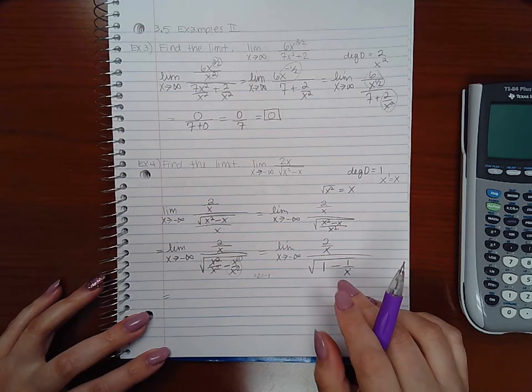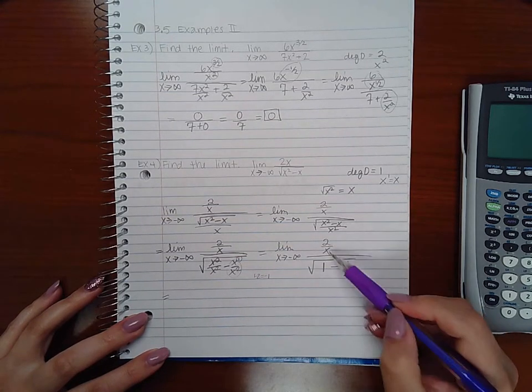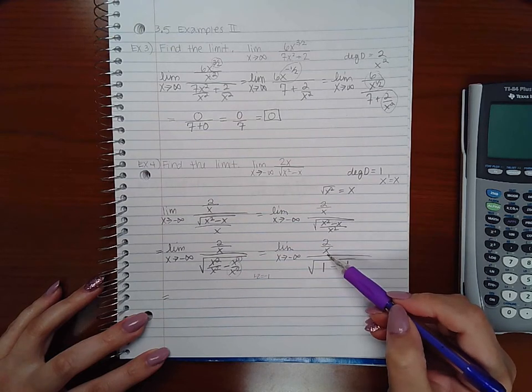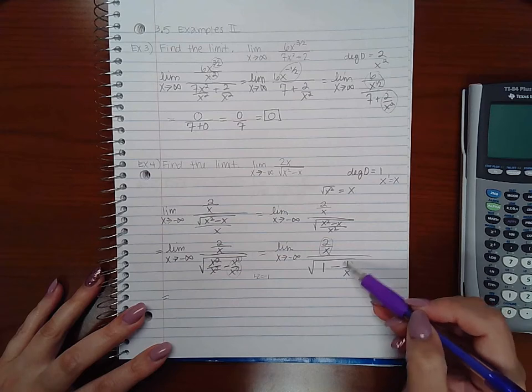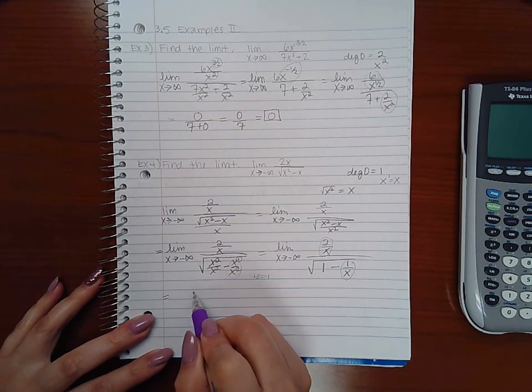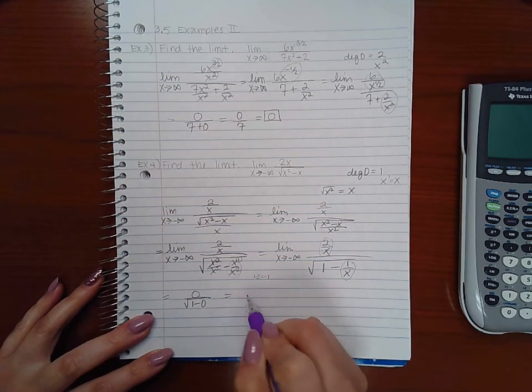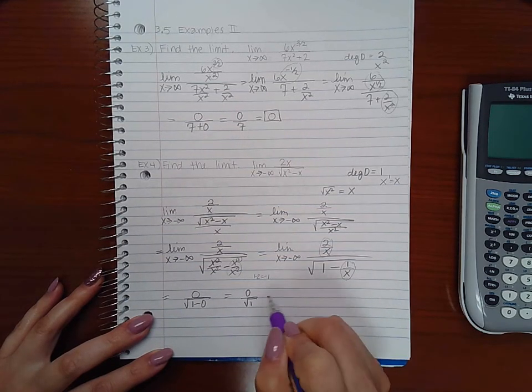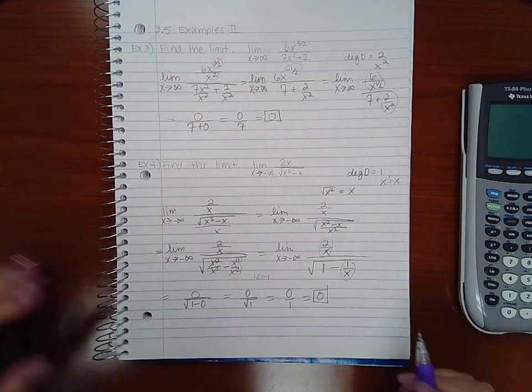Then finally, I can take the limit. Whether I'm approaching negative infinity or positive infinity, any constant over an infinity will go to 0. So what I end up with here is 0 over the square root of 1 minus 0, or 0 over the square root of 1, 0 over 1, which is just 0.